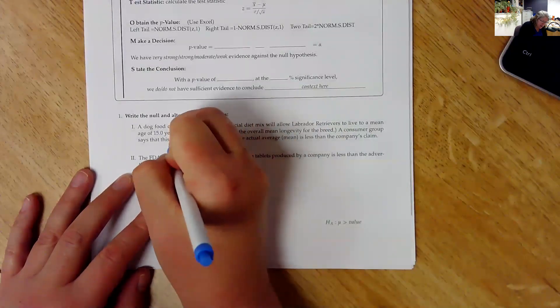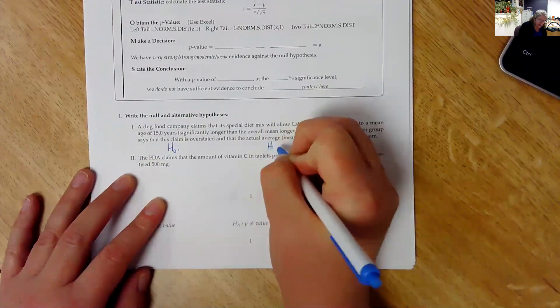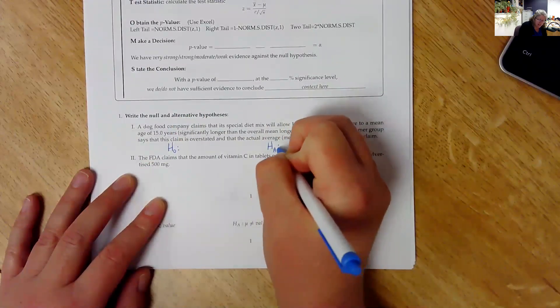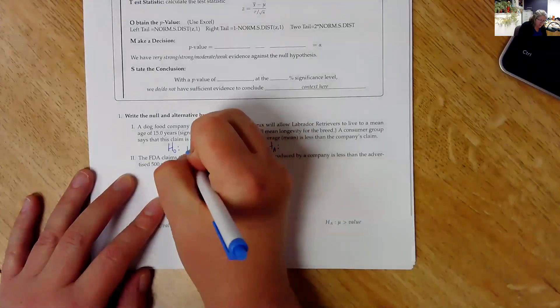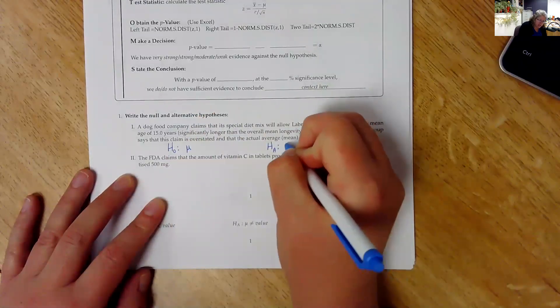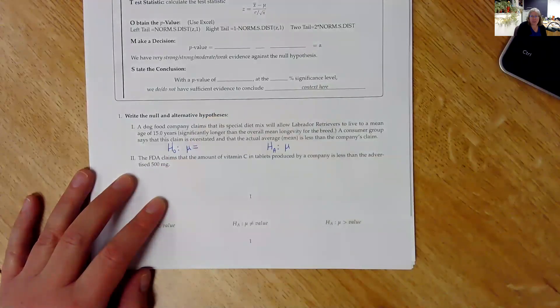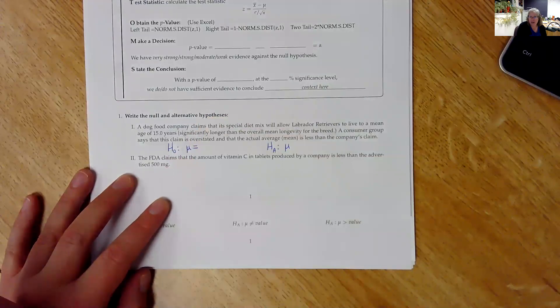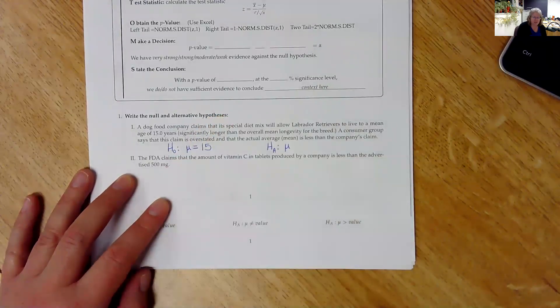So our symbol for the null is H with a little zero, and the symbol for the alternative is H with an A. We are using the mean here, so I'll make sure I put a mean symbol for each one. The null is always mu is equal to. So the company claims that the dogs live to be an average of 15 years. So that would make that my null hypothesis. So mu is 15.